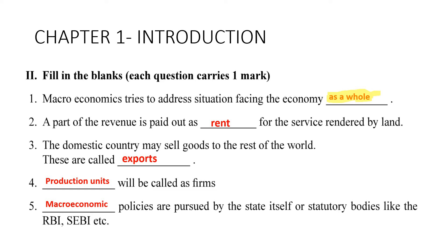Second: the part of revenue paid out as rent is the reward for the service rendered by land. Third: goods sold by the domestic country to the rest of the world are called exports.